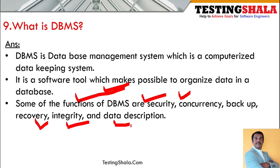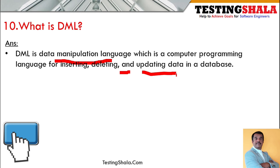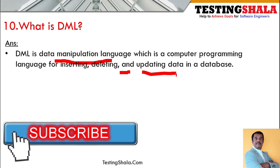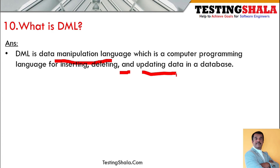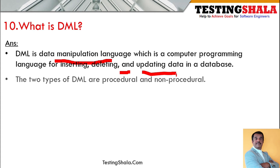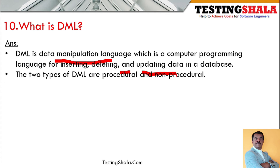What is DML? DML stands for Data Manipulation Language, which is a computer programming language for inserting, deleting, and updating data in a database. There are two types of DML: procedural languages and non-procedural languages.